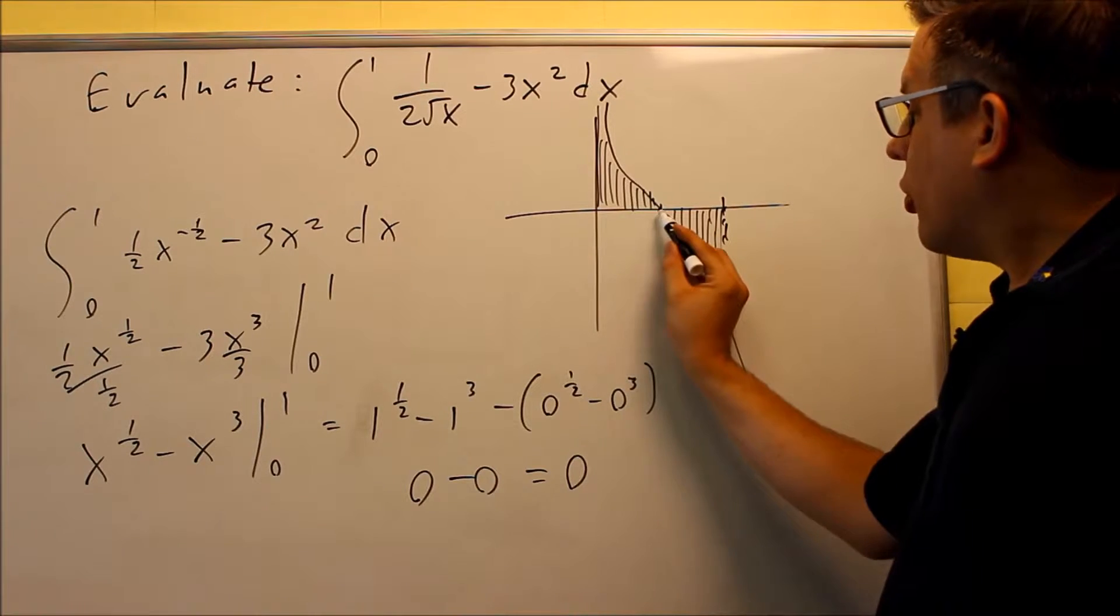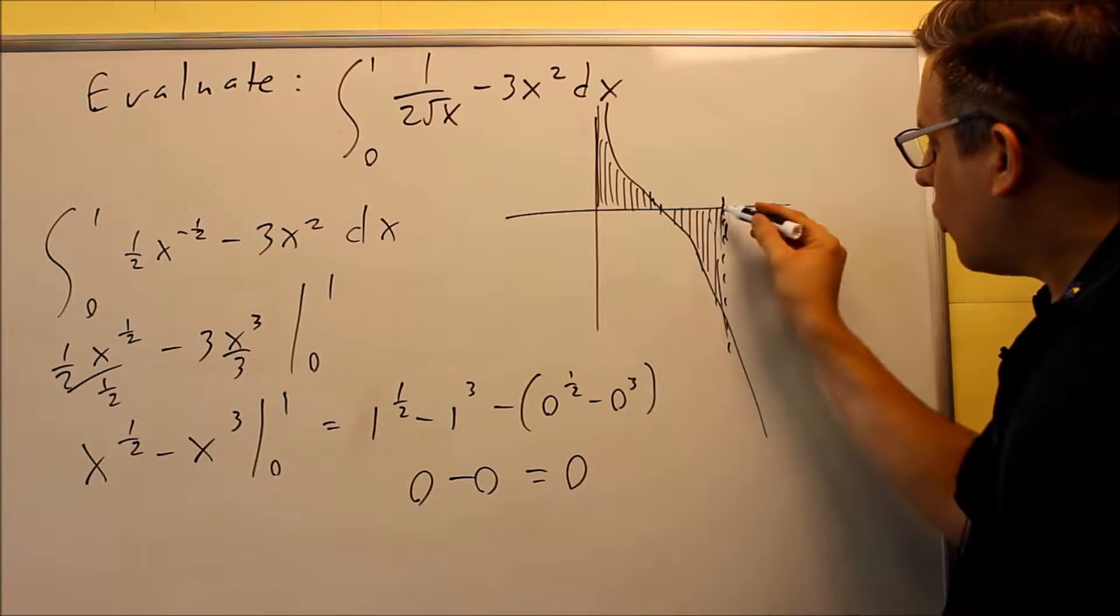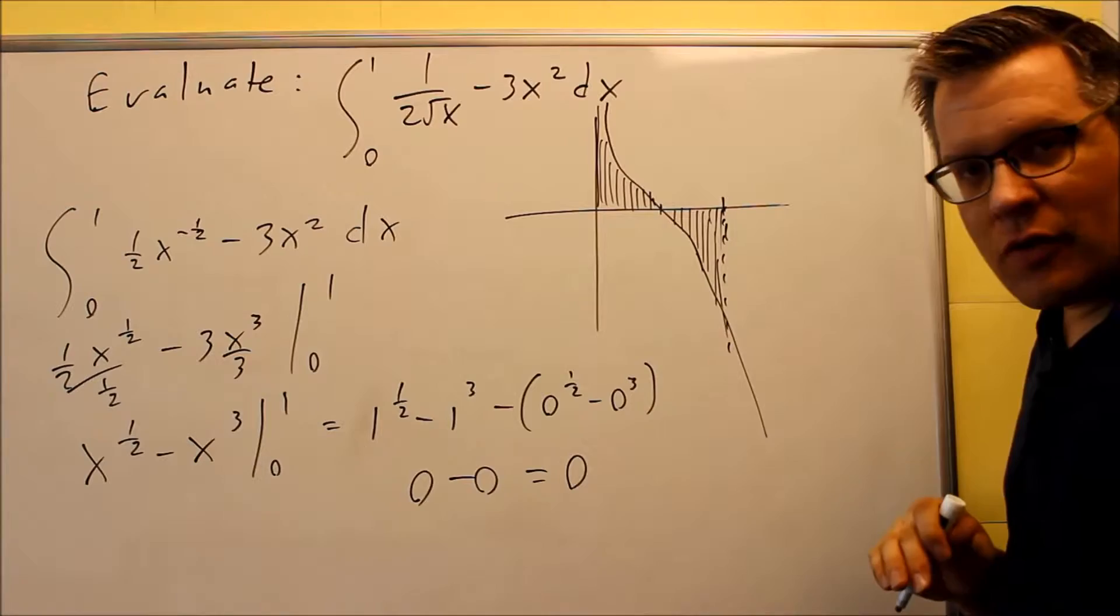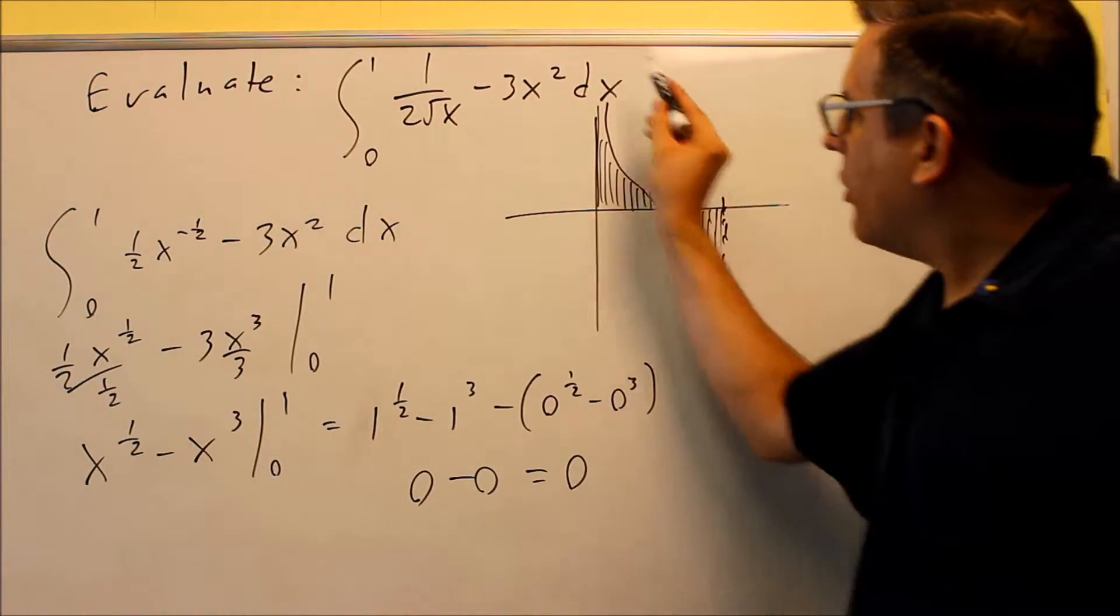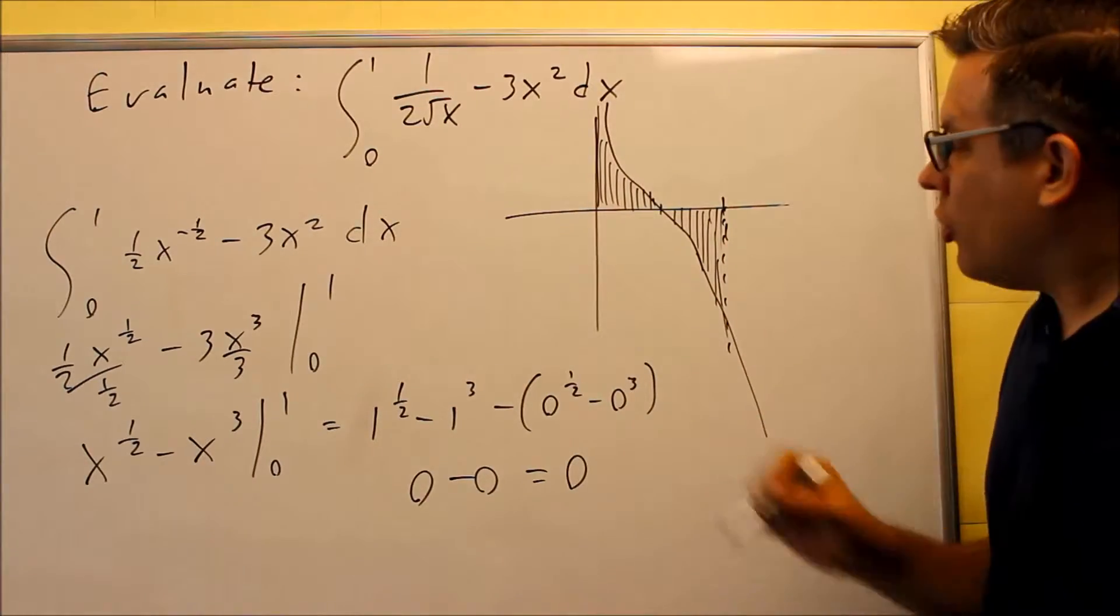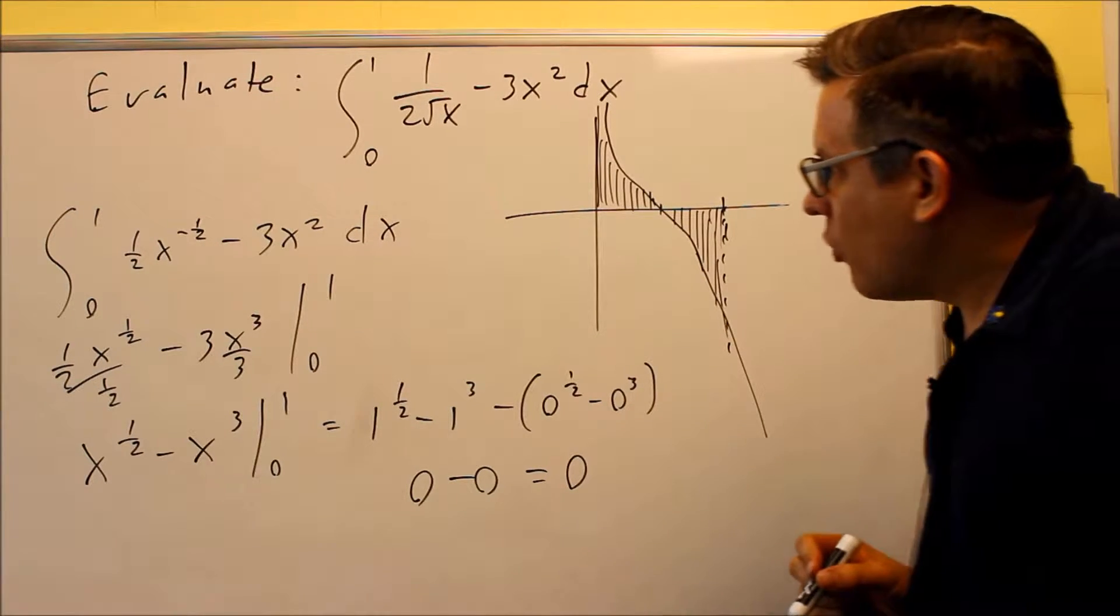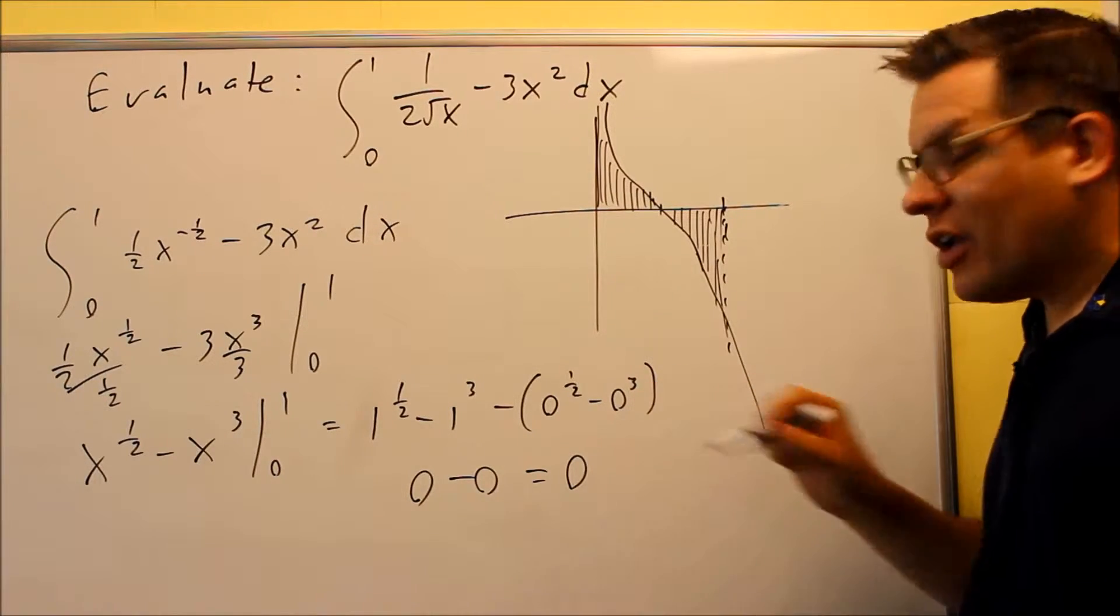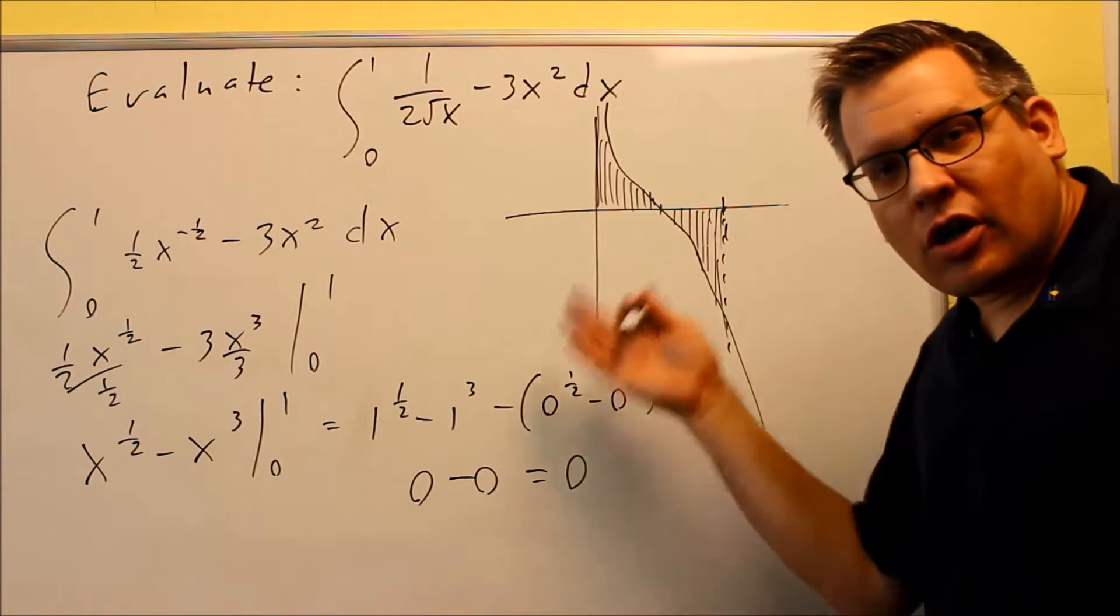And what you'll notice is that these two areas are exactly the same. So if I just did from 0 to 1/2, I would get a value. And then if I go from 1/2 to 1, I would get a negative value. So when I add these together, the areas cancel themselves out. So I've got a positive area and a negative area, and it cancels. So if you're given this kind of problem where it's already set up as an integral, your answer could be 0.